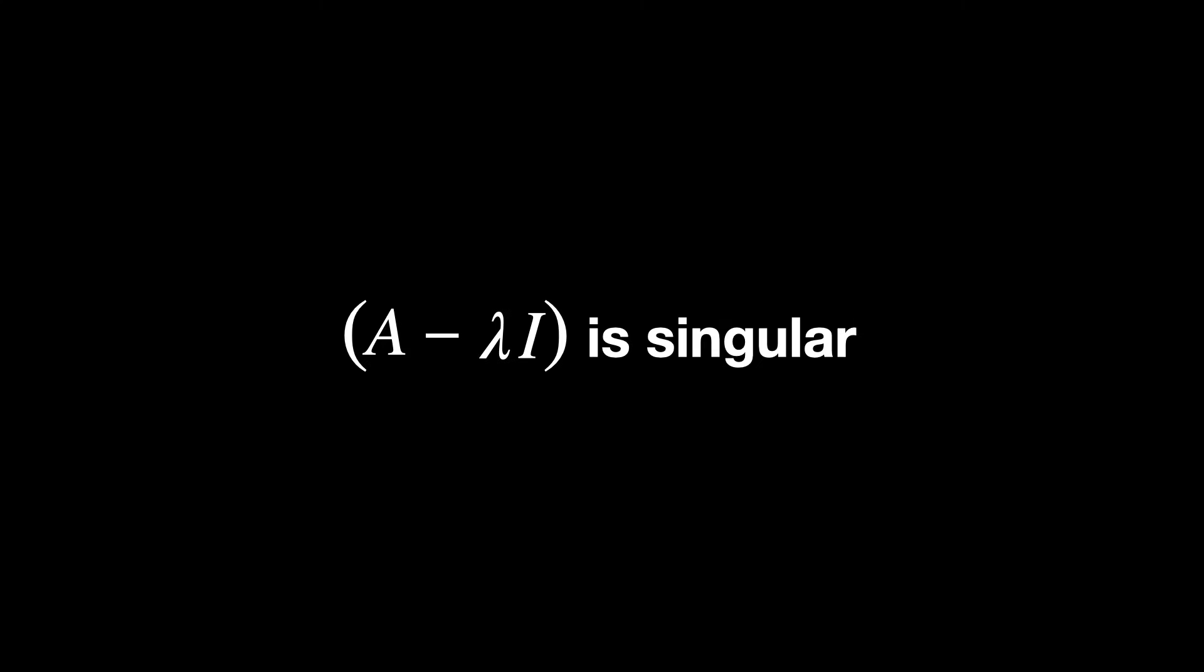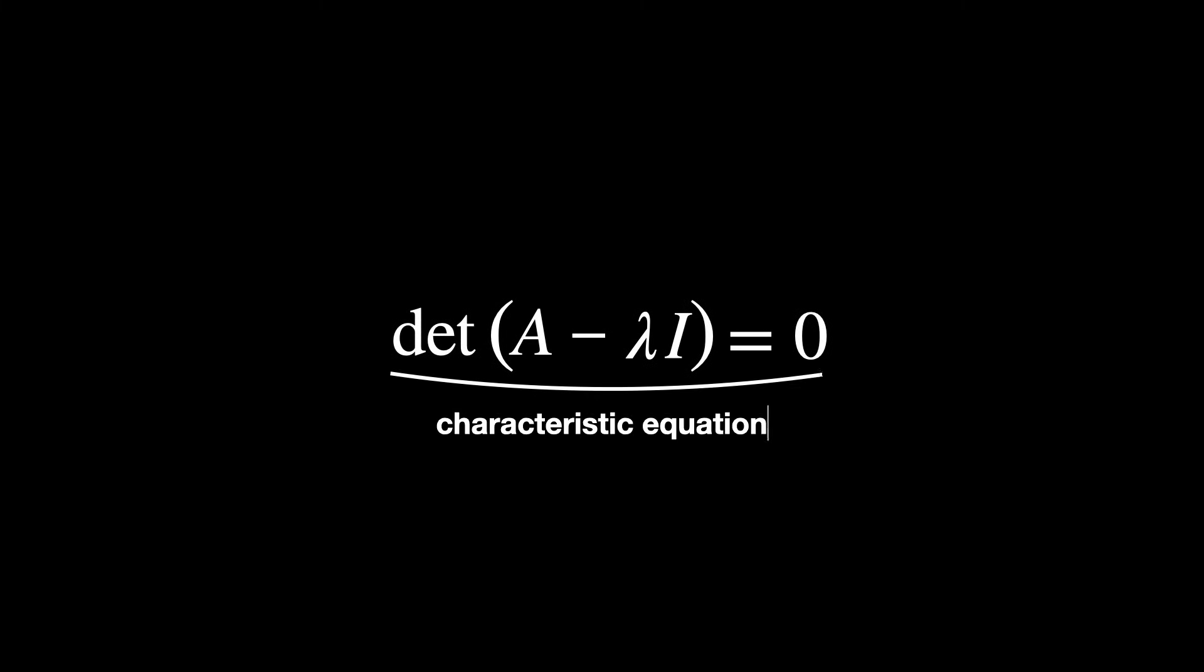If these non-trivial solutions exist, we say that the matrix A-lambda-I is singular, and therefore, it's like this. This is called a characteristic equation.